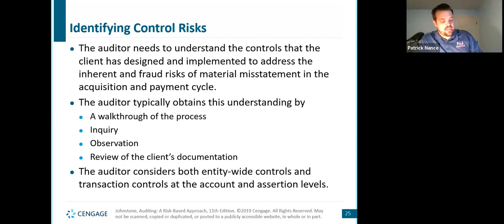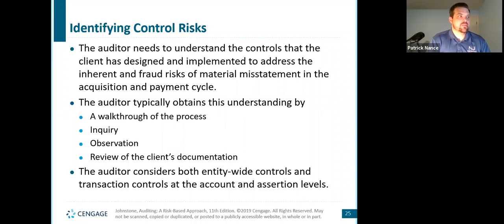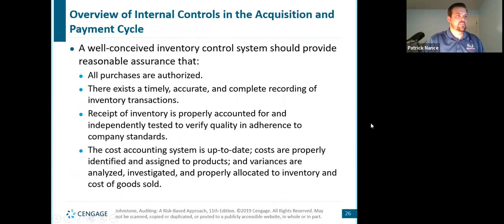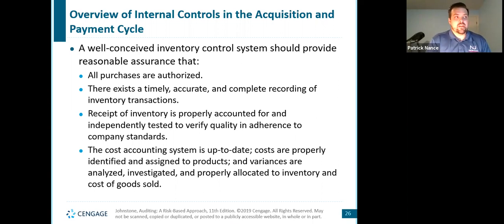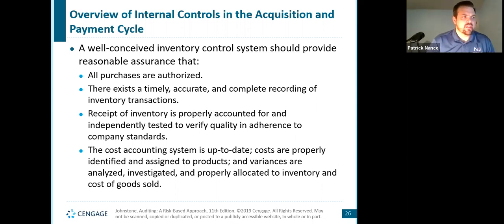Page 578 — identifying control risks. The auditor needs to understand the controls that the client has designed and implemented to address the inherent and fraud risks of material misstatement in the acquisition and payment cycle. The auditor typically obtains understanding through a walkthrough process, inquiry, observation, and review of the client's documentation. The auditor considers both entity-wide and transaction controls at the assertion level. An overview of an internal control system for the acquisition and payment cycle on page 579: a good control system should provide that all purchases are authorized, there exists timely, accurate, and complete recording of all inventory transactions, the receipt of inventory is properly accounted for and independently tested to verify quality and adherence to company standards, and that the cost accounting system is up to date with costs properly identified, assigned, variances analyzed, investigated, and properly allocated to inventory and cost of goods sold.